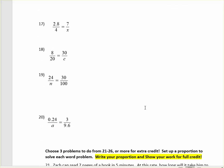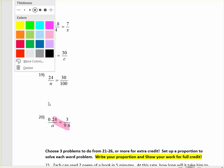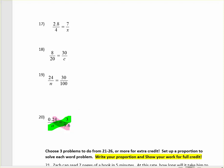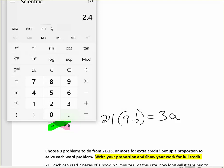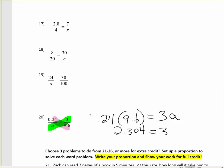Let's look at number 20. There's nothing different in 20 except that it's decimal numbers. But we would still multiply one diagonal, and that would be equal to the other diagonal. So that means that I'd have 0.24 times 9.6, and that would be equal to a times 3, but we would write that as 3 times a probably. And then we need our calculator. 0.24 times 9.6 is equal to 2.304. And that's equal to 3 times a.